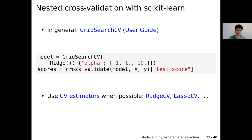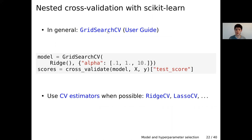GridSearchCV can do this for any kind of model. But for some specific models such as ridge or lasso, there can be more efficient ways to perform this inner cross-validation loop. For these, there are specialized estimators — for example RidgeCV — which conceptually does the same thing but more efficiently. When a specialized CV estimator is available, we use it; if not, we fall back to GridSearchCV, which works for any estimator.